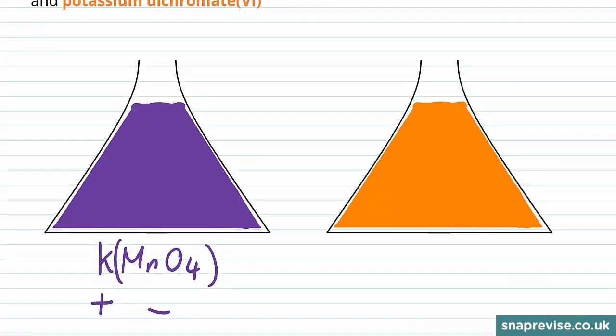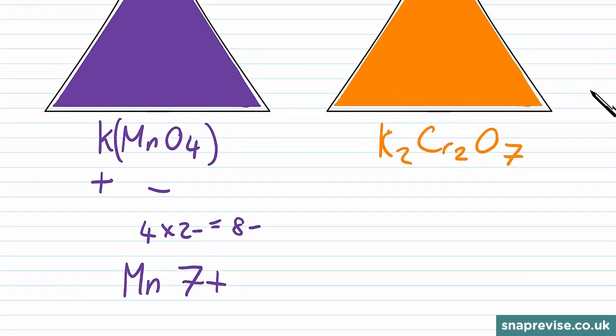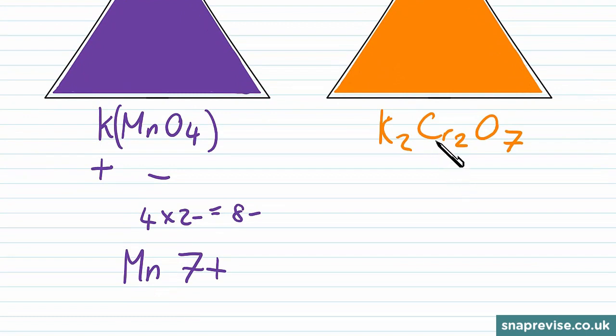Similarly, for potassium dichromate, which has the formula K2Cr2O7, we can use logic to work out the oxidation number of the chromium ion here. So the potassium, because there's 2 of them, will provide a 2+ charge here, so the dichromate ion, Cr2O7, must provide a charge of 2-. If we then consider the oxygens again, we have 7 lots of 2-, which gives us 14-.